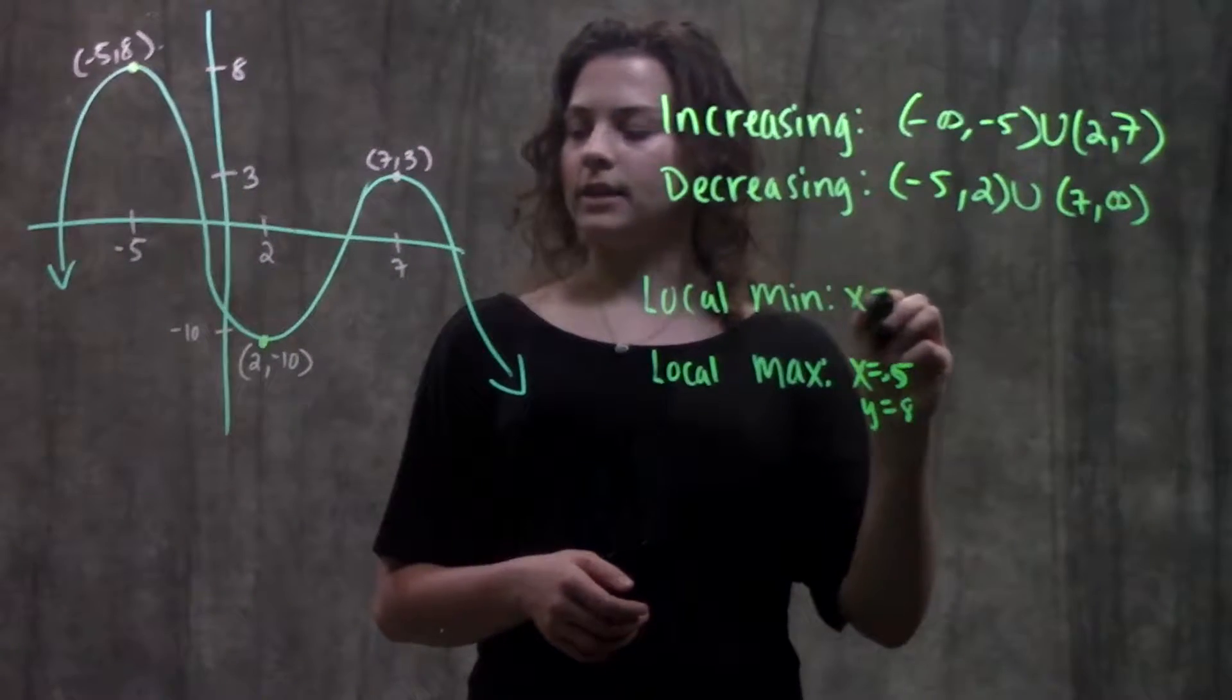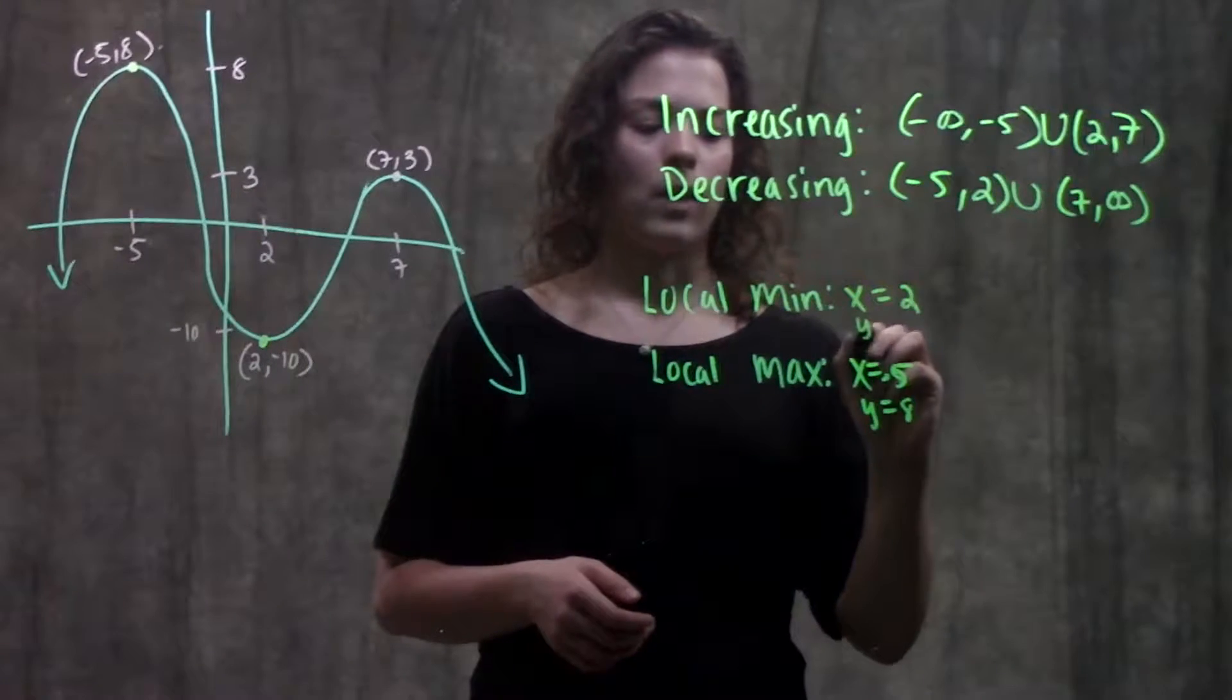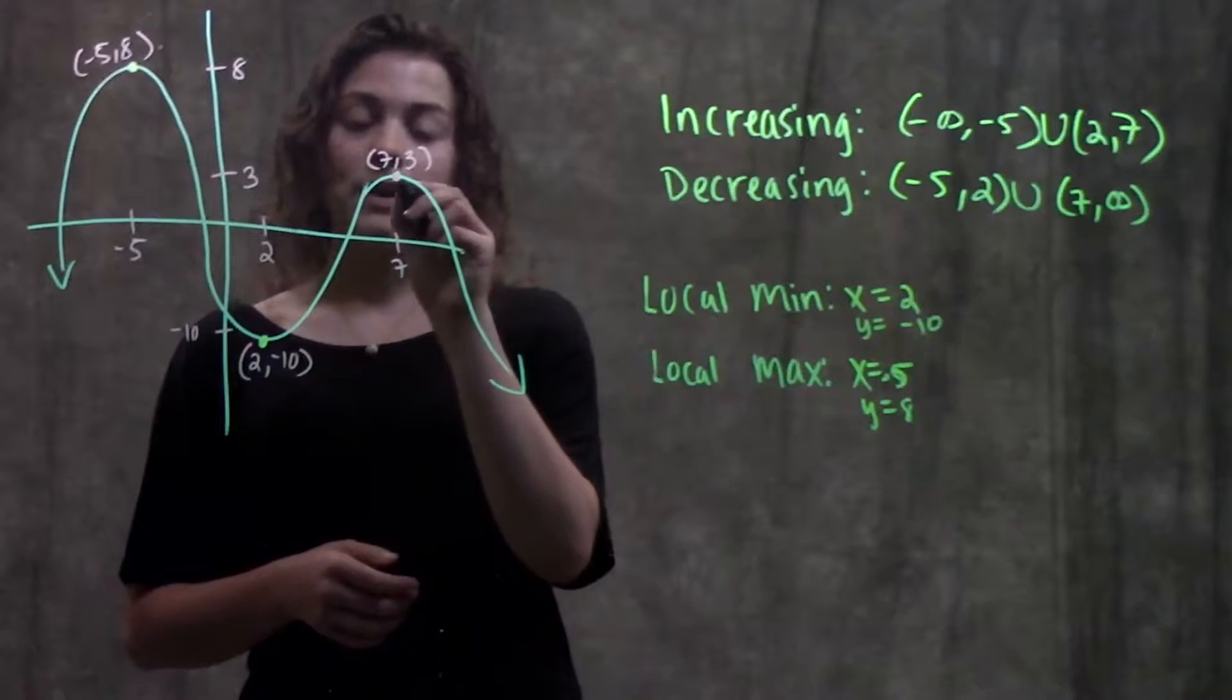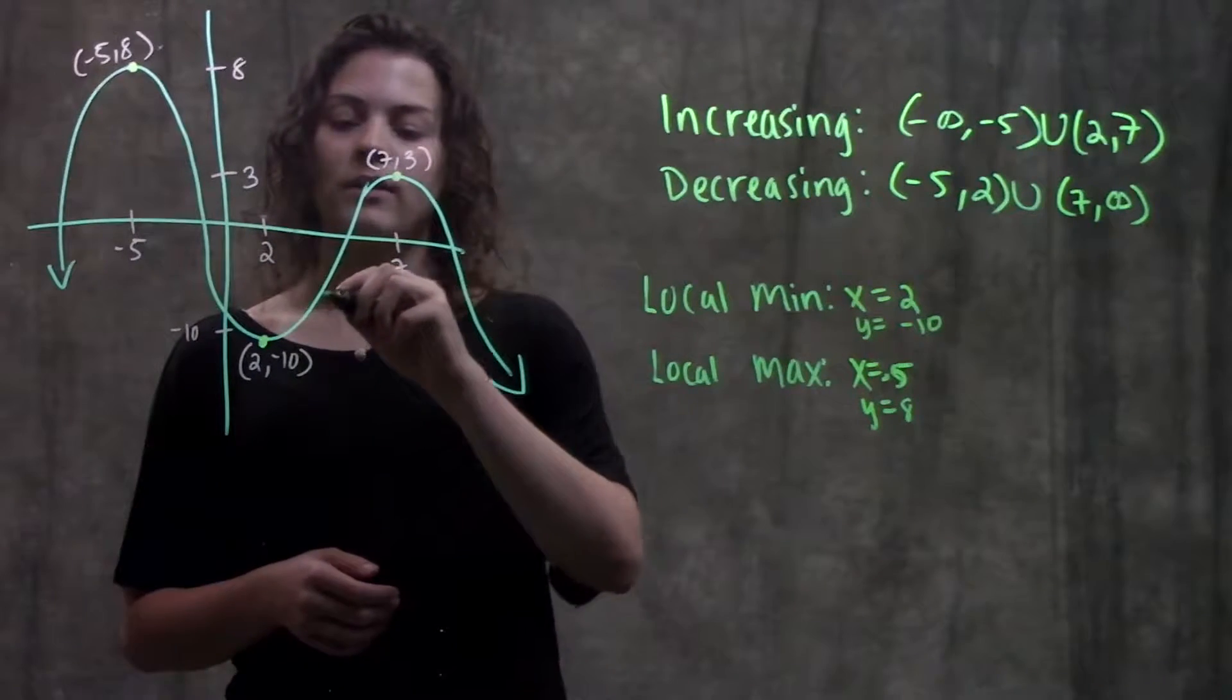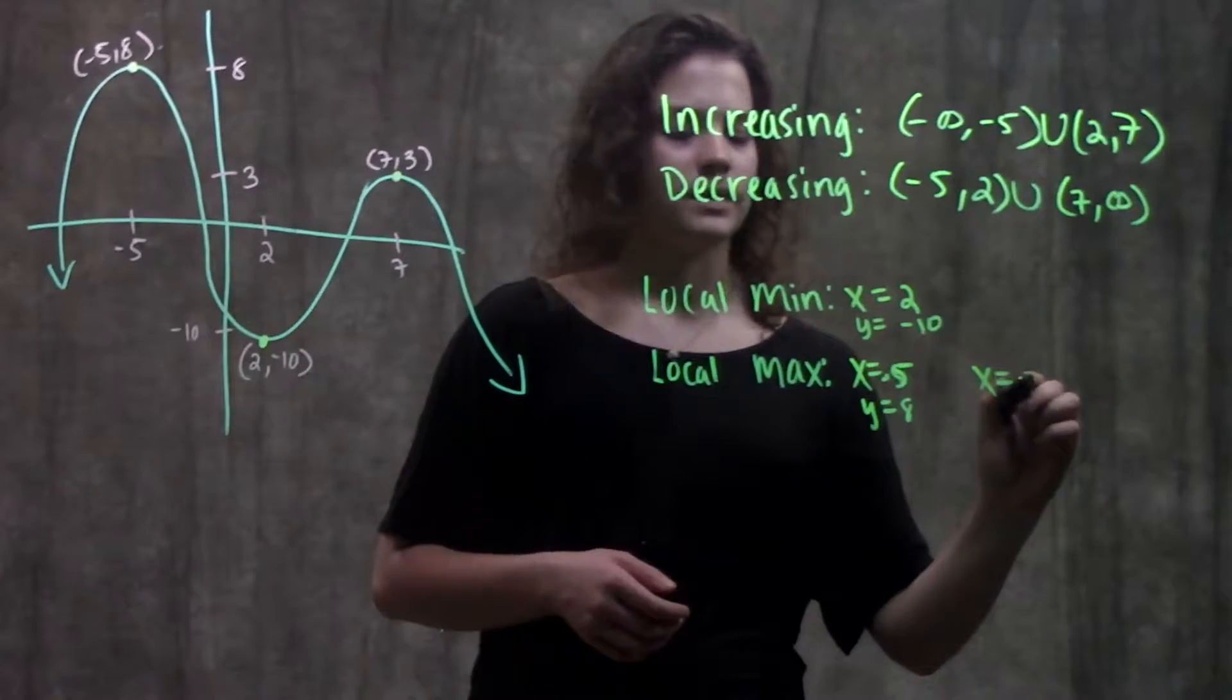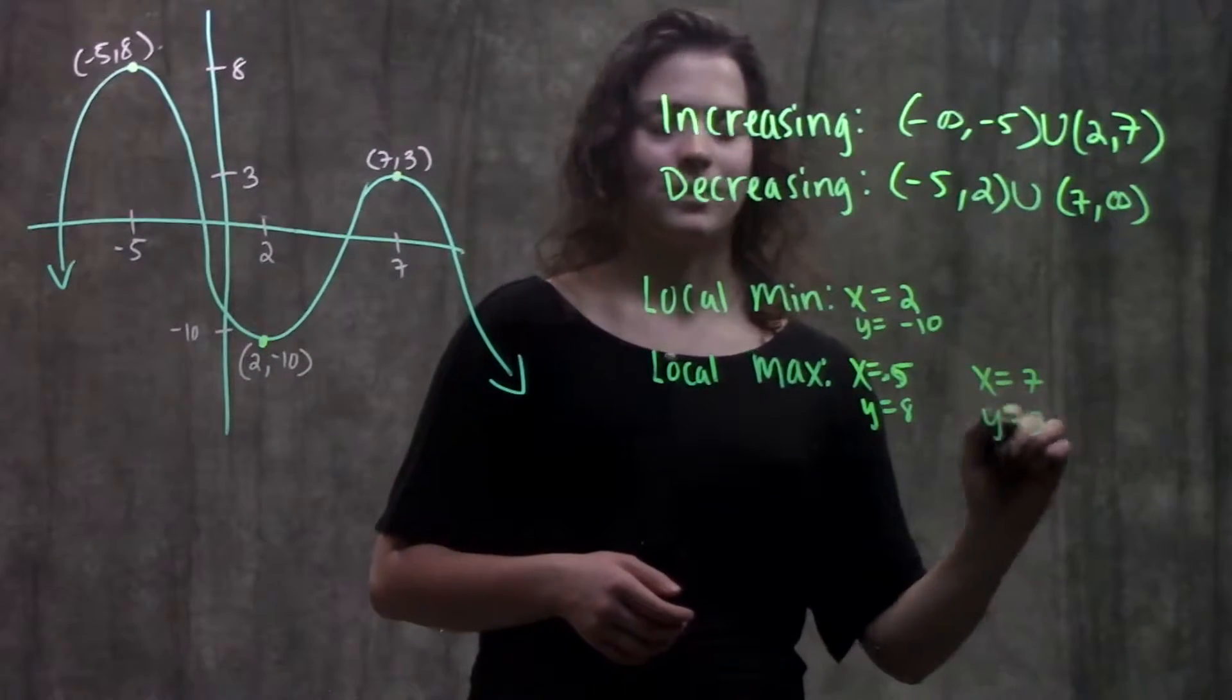We have another maximum right here where our graph changes from increasing to decreasing, at x equals 7 and y equals 3.